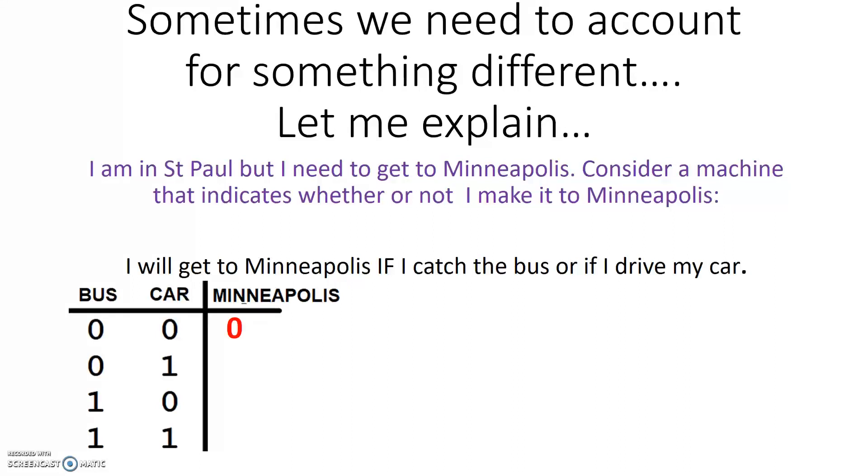Second row, it says that I did not take the bus, but a one on car indicates that I did take the car, so I made it to Minneapolis. The third case, it indicates that I took the bus, and I did not drive my car, but I made it to Minneapolis because I took the car.